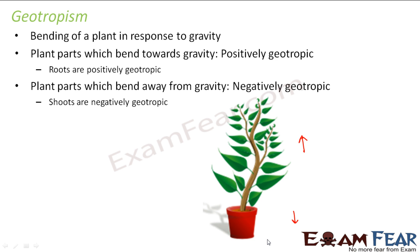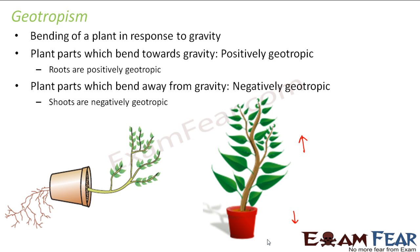The movement will happen only in one direction. For example, in phototropism the shoots bend towards light, and in geotropism everything follows one particular direction. If you keep a plant upside down, the roots will still try to grow towards the earth surface and the stem will grow upward — this is their directional movement.